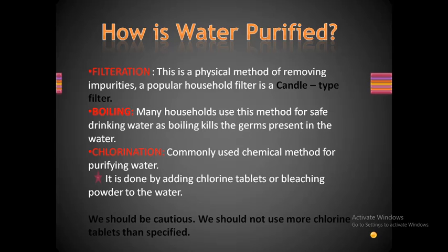The second method is boiling. Many households use this method for safe drinking water, as boiling kills the germs present in the water. The third method is chlorination, which is the commonly used chemical method for purifying water. It is done by adding chlorine tablets or bleaching powder to the water. We should be cautious and not use more chlorine tablets than specified.